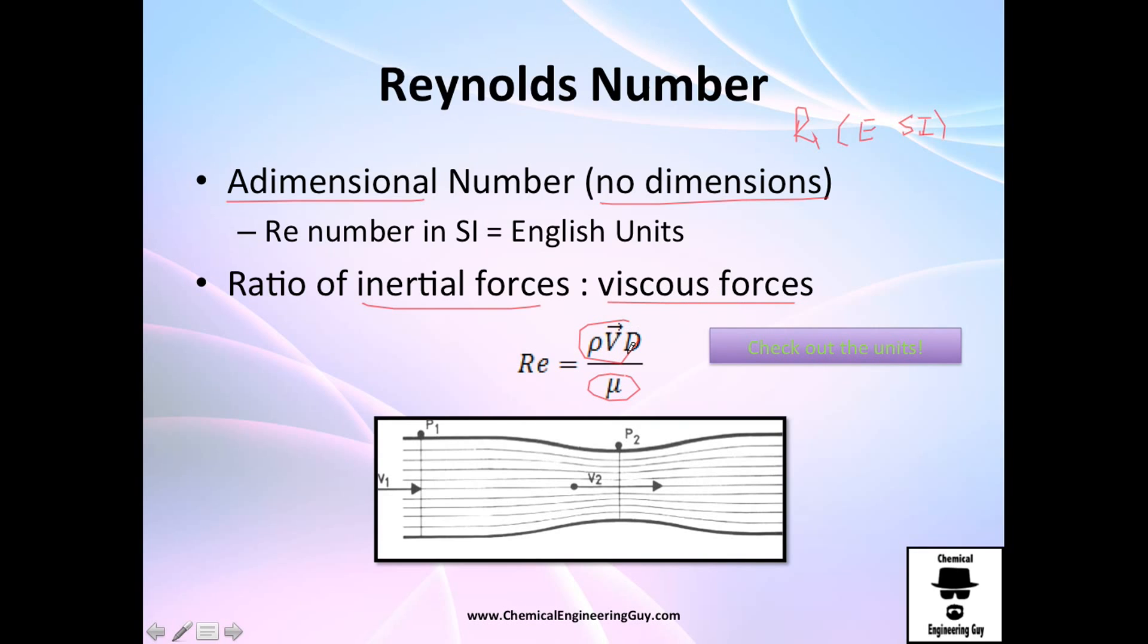If you check the units, all units will cancel and you'll have no units at all. The Reynolds number by definition in a pipe will be density times velocity times diameter divided by viscosity.